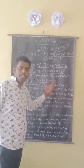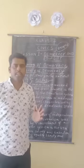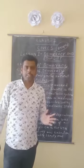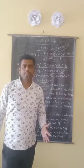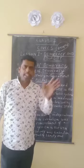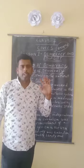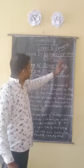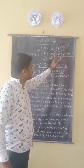In early times there were forms of government such as monarchy, oligarchy, dictatorship, and authoritarianism. People rejected these forms of government and tried to choose democracy instead.